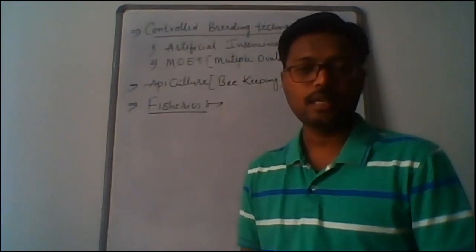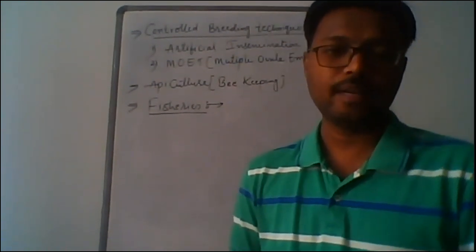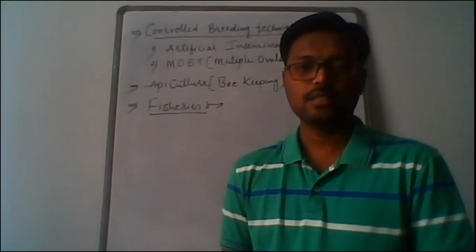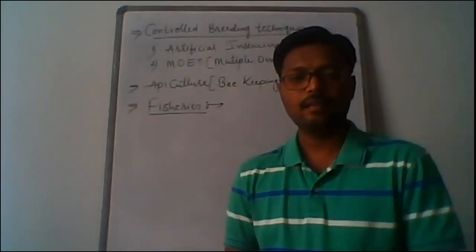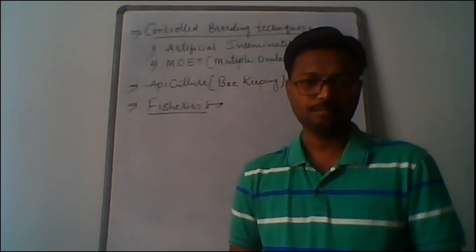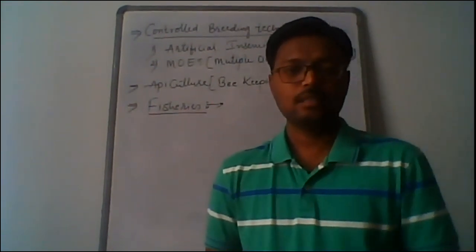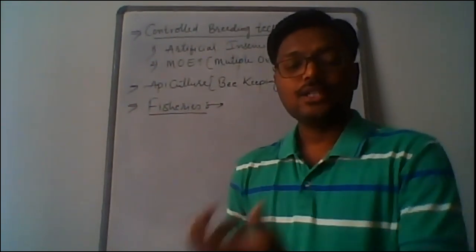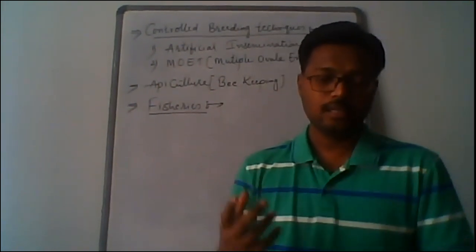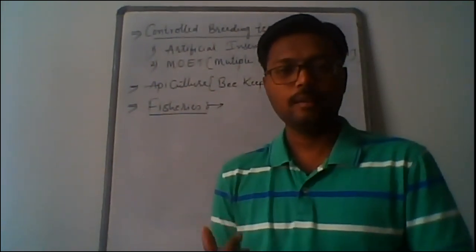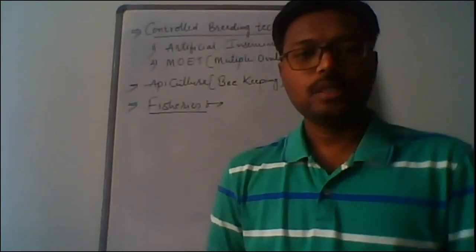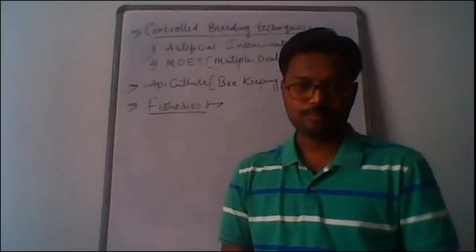To summarize apiculture species: Apis dorsata is the largest honeybee; Apis florea is the little bee, the smallest; Apis indica is the Indian honeybee reared in India; and Apis mellifera is used for rearing honeybees outside India. This completes the topic of apiculture.